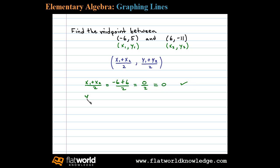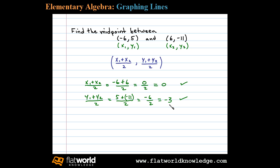y1 plus y2 over 2 equals 5 plus negative 11, over 2. 5 plus negative 11 is negative 6, and negative 6 divided by 2 is negative 3. So negative 3 is the y value of the midpoint. Therefore, the midpoint is (0, -3).